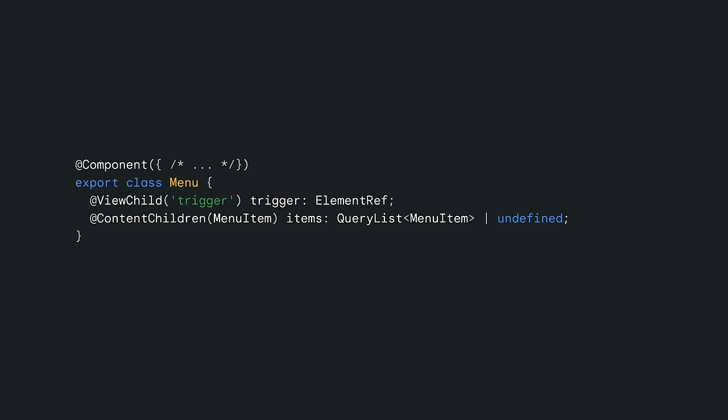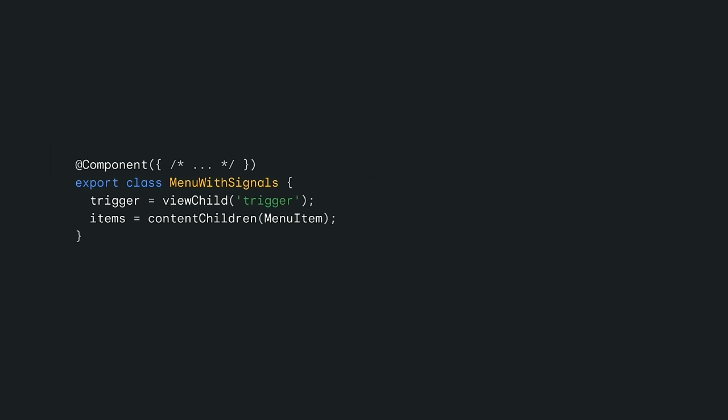The first API we're going to talk about are the new signal-based query APIs. When I say queries, I'm talking about Angular APIs like ViewChild and ContentChildren that, if you've used Angular before, you've probably used — and may have felt were a little bit verbose. The new signal-based APIs are way cleaner and shorter. These new APIs give you a signal of your query results, regardless of whether you're querying for a single element or multiple elements. You can use that signal result in computed expressions and effects. It's more concise, more consistent, and better takes advantage of type inference.